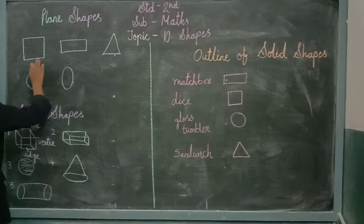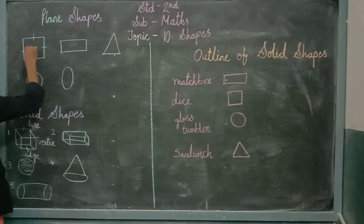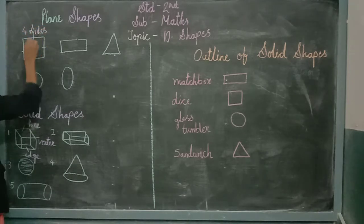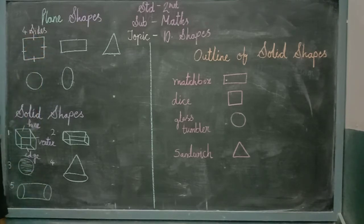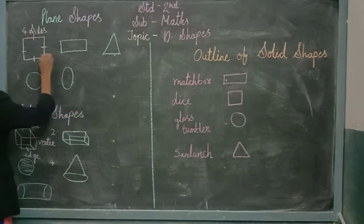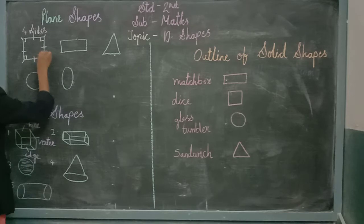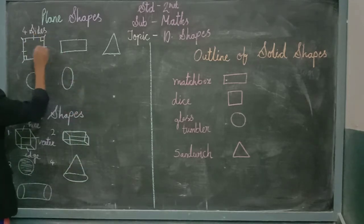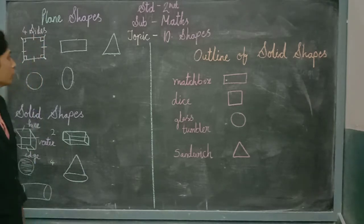When I am talking about a square — a square has how many sides? A square has 4 sides. Then a square has how many vertices? A square has 4 vertices. Vertices means these corners. And all 4 sides of a square are equal to each other.